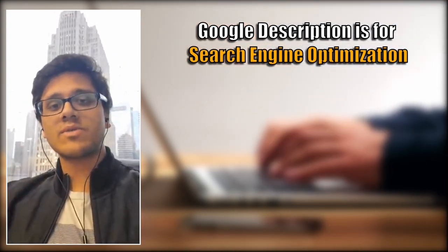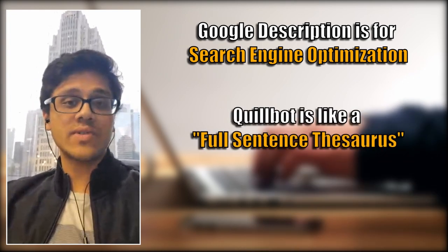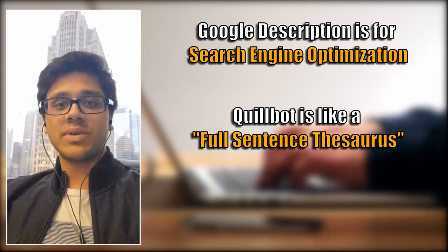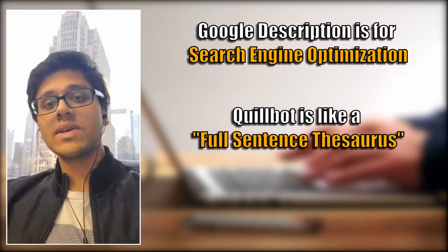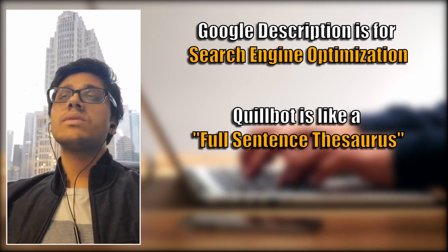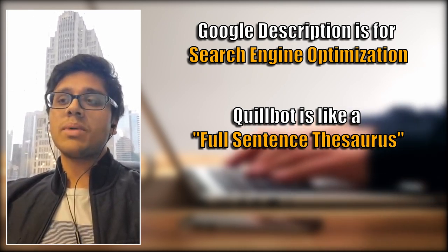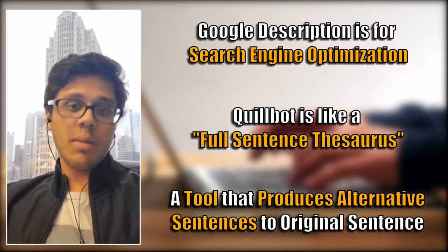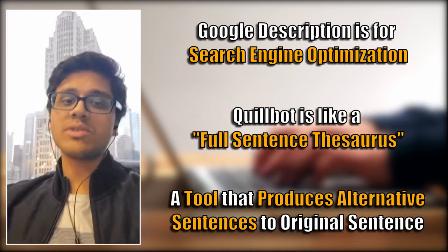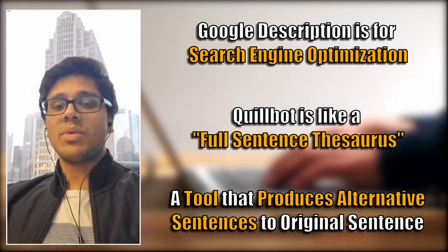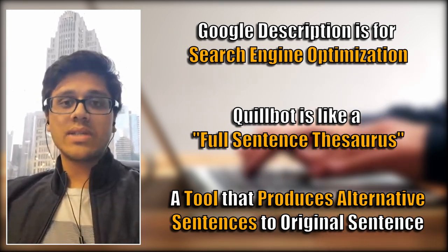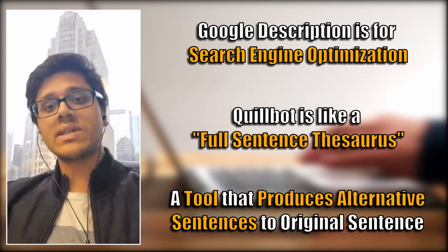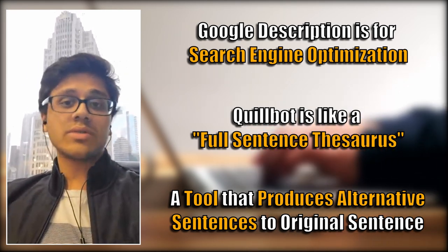The way that we usually like to describe it is as a full sentence thesaurus. So it takes a full sentence, it rewrites it to produce multiple alternatives to that sentence. But really what it is, is a tool that executes a particular function, almost like a calculator. So we train an AI that can take a sentence, try to extrapolate a meaning for that sentence, and then produce an alternative sentence.